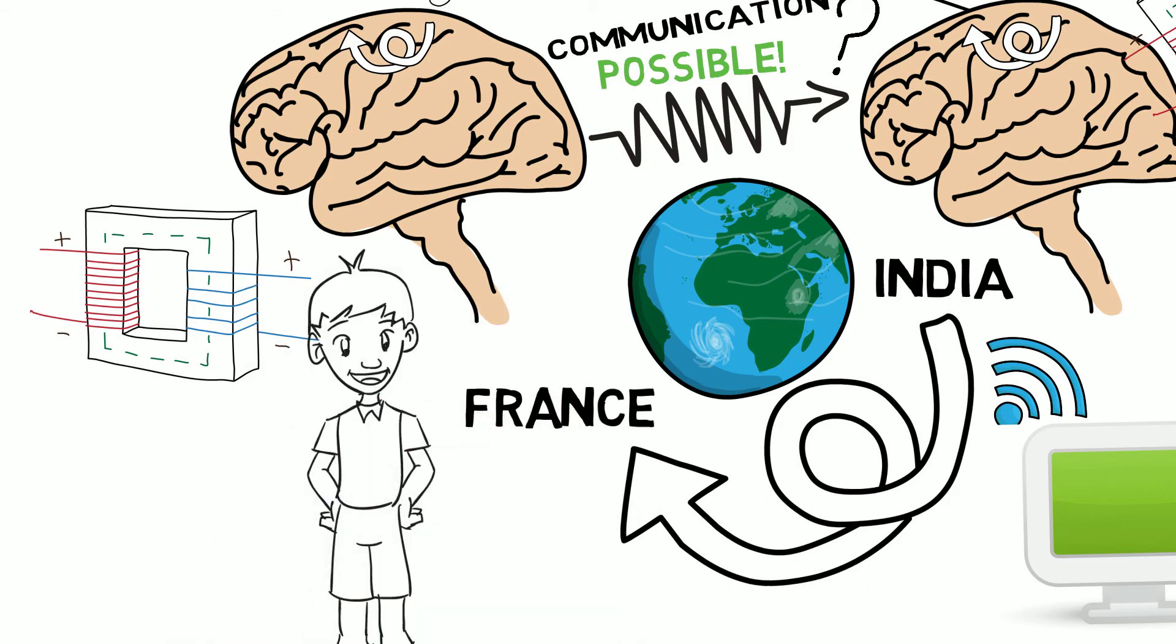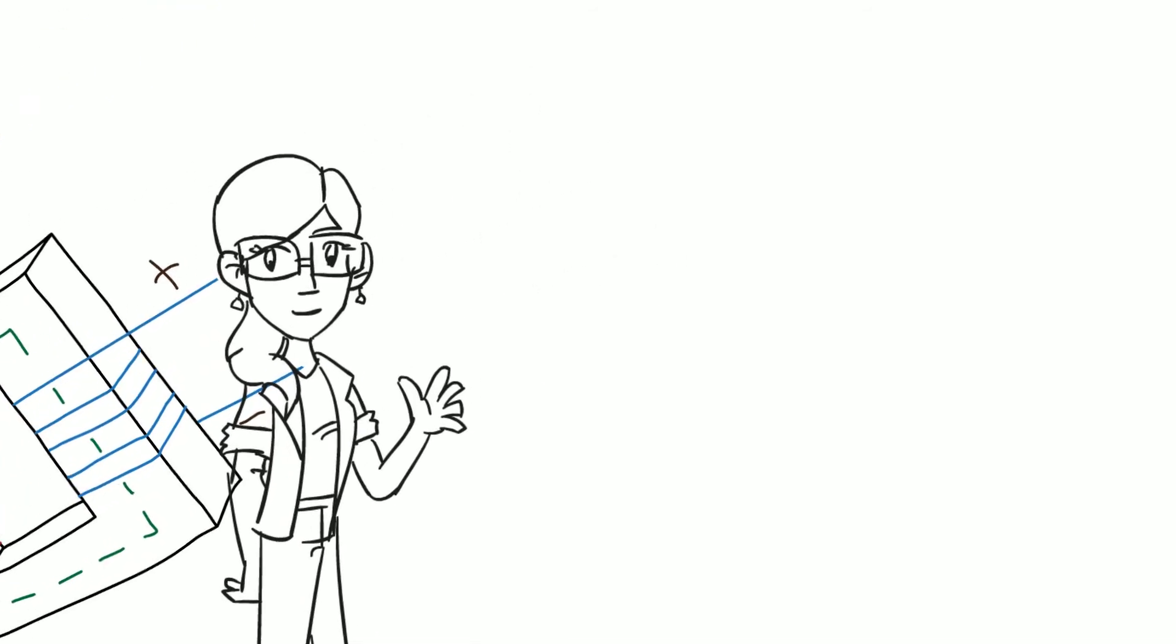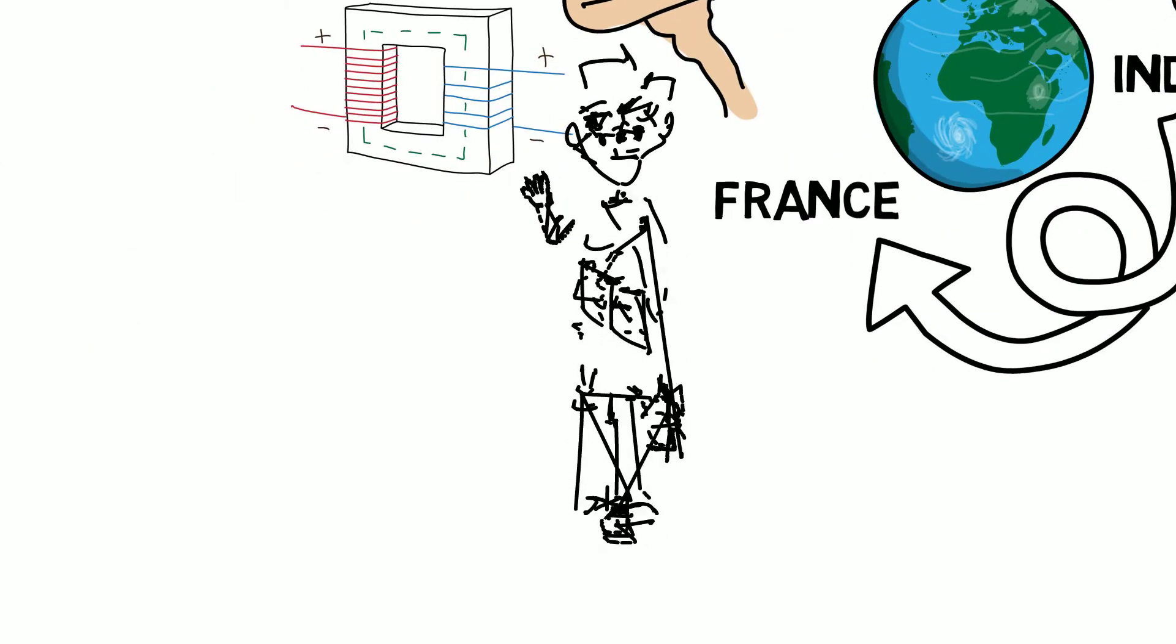The experiment involved transmitting envisioned actions for the words ciao and hola. The software interpreted the thoughts and converted the information to binary code.